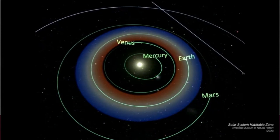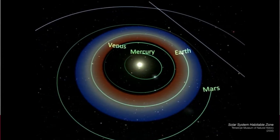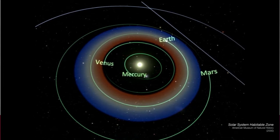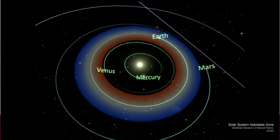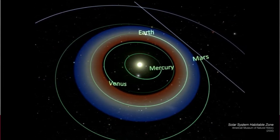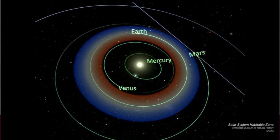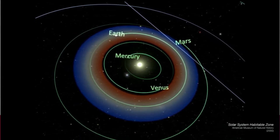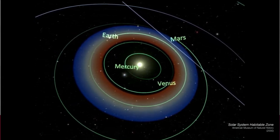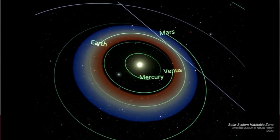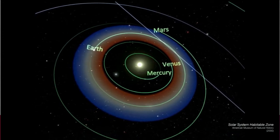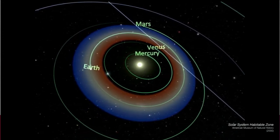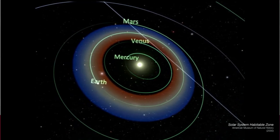For instance, if we zoom out a bit, we can see that the Earth is in what's called the habitable zone, or the Goldilocks zone, of our own solar system, represented by these colorful bands here. It's just the right distance from the sun where it's not too hot and not too cold — the temperature is just right to support abundant liquid water. But even this classical view of the solar system is incomplete.